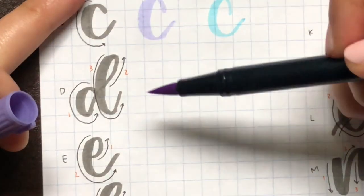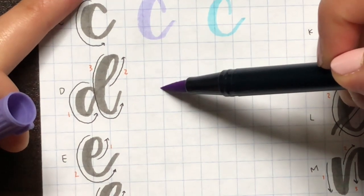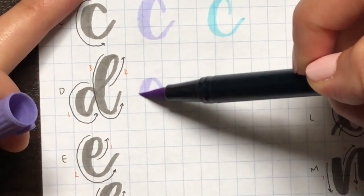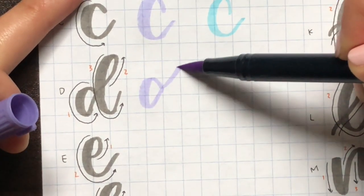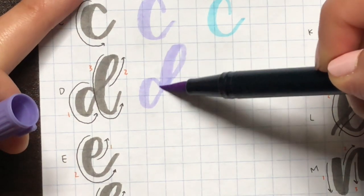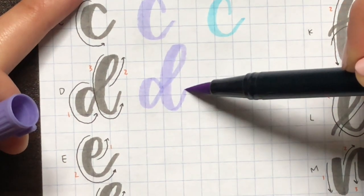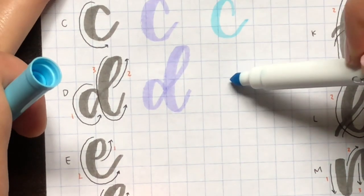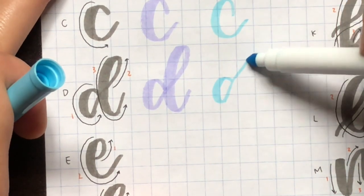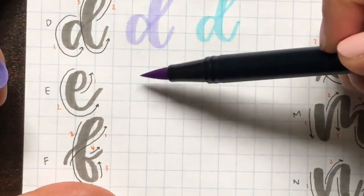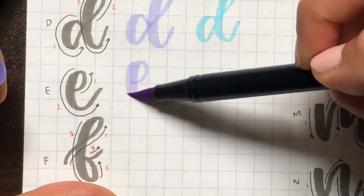So for D you want to form the little loop first and then when I go up you can see I slightly changed the angle of what I'm going up with. Here I'm going to do it again with the blue marker, but you can see that I slightly changed the angle and that's just making more room for the thicker down stroke.